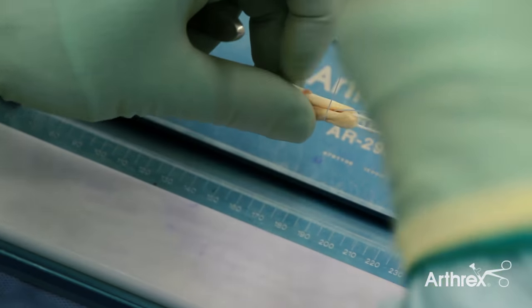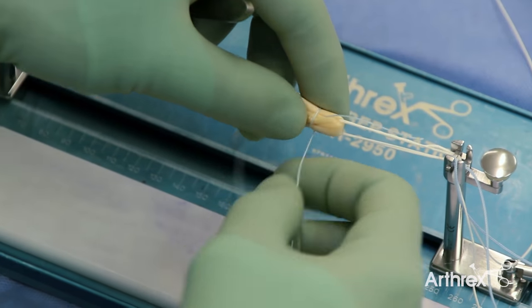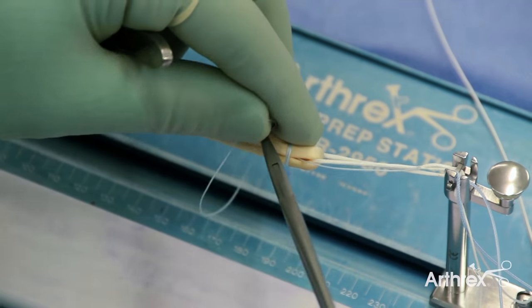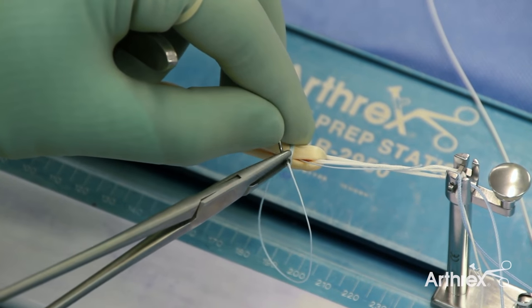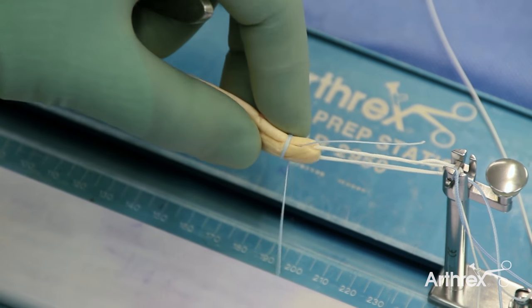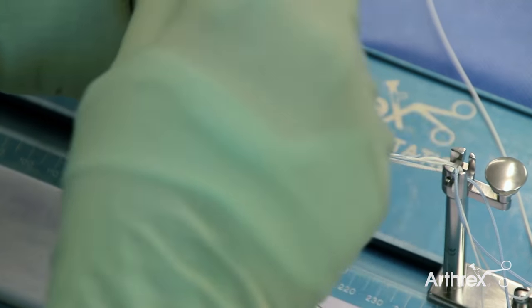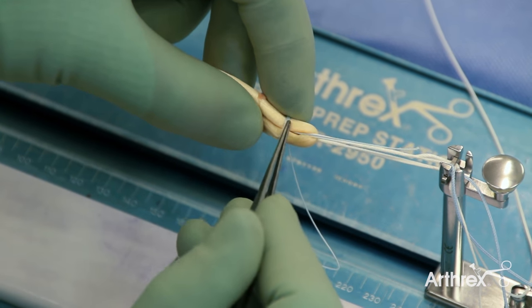We then pass the suture three to four times around the graft. Note that I keep my index finger on the loops that I just made. By doing this, they don't unravel and tension is maintained.